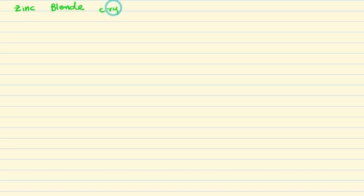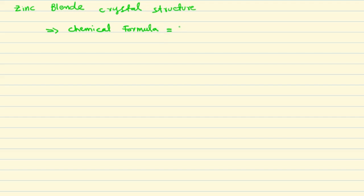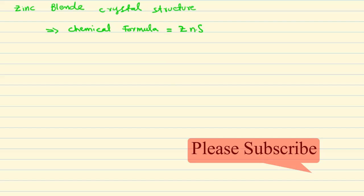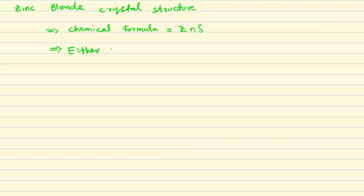Welcome, friends. Welcome to Step-by-Step Tutorials. Today we will understand the zinc blende crystal structure, which is one of the types of structures of ceramics. Zinc blende is a category that includes many structures. The specific chemical formula for zinc blende is zinc sulfide (ZnS), where zinc or sulfur atoms occupy specific positions.